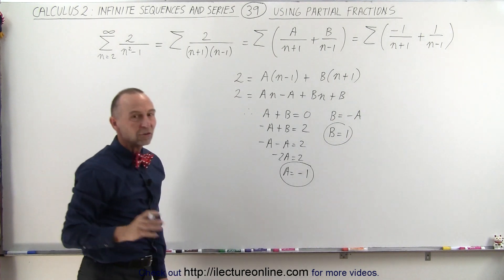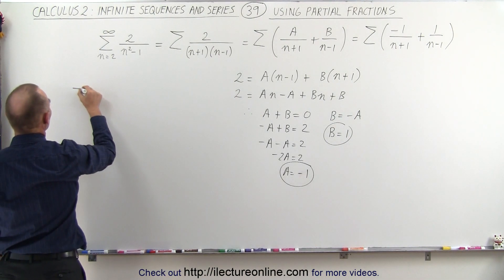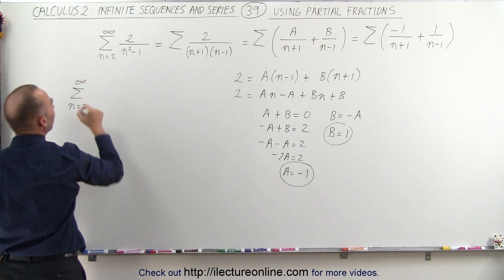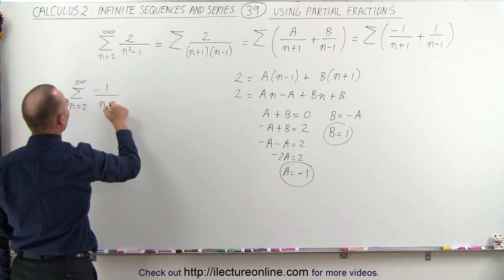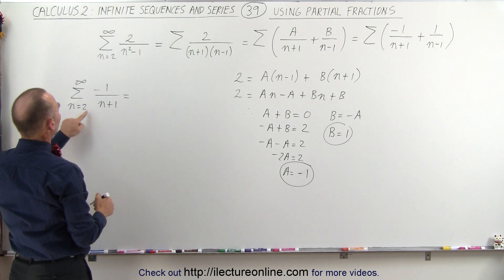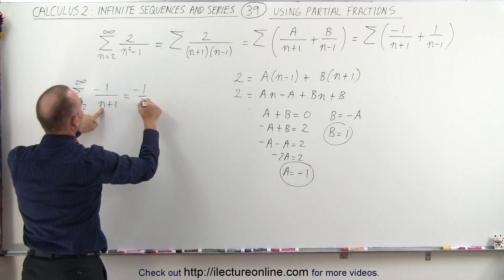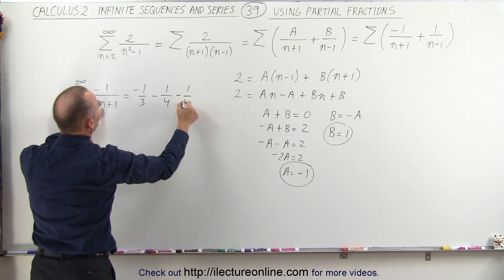All right. So, now we're going to sum those up separately. And so, we're going to get the sum as n equals 2 to infinity of minus 1 divided by n plus 1. This is going to be equal to, starting with the first one, if n is equal to 2, we get minus 1 over 3, minus 1 over 4, minus 1 over 5, minus 1 over 6, and so forth.